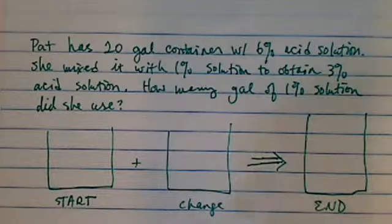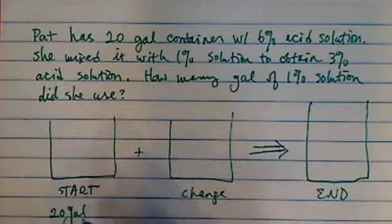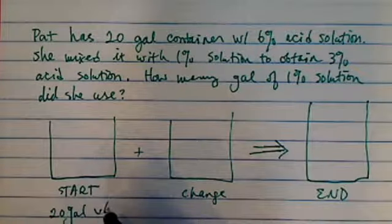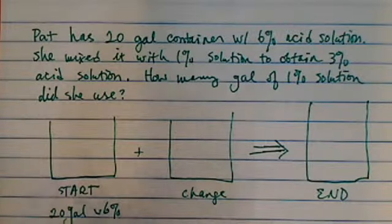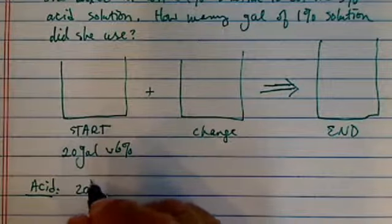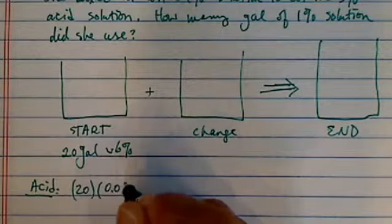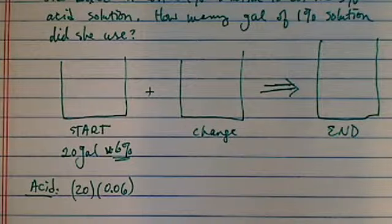So let's start at what we have. The amount we have is 20 gallons with 6% of acid. So amount of acid in the solution we've got to calculate it.